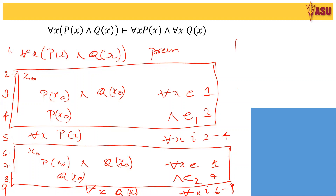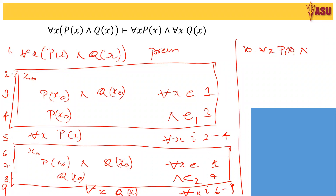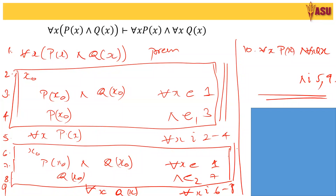From step 5 and step 9, we can write for all x, Q(x) — this is the for-all-x introduction rule from steps 6 to 8. So we have completed the deduction of for all x P(x) and for all x Q(x) given for all x, P(x) and Q(x). One important point to note is that the same set of steps repeat twice because we are considering a random x₀ in the case of the universal quantifier.